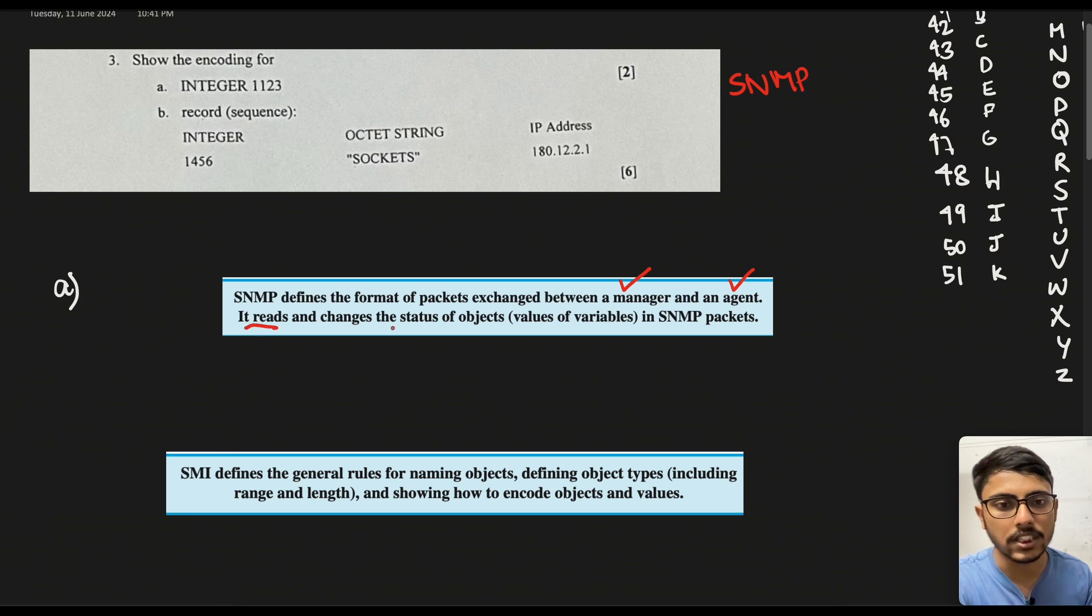So it reads and changes the status of the objects that is the value or variable of variables in SNMP packets. So the SNMP packets are basically transmitted between the manager and an agent to facilitate the network architecture.